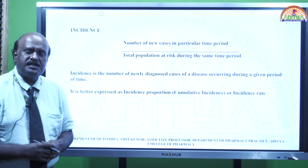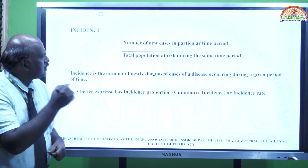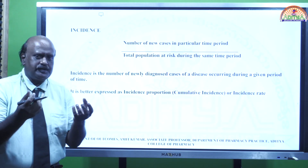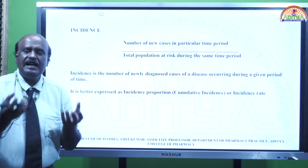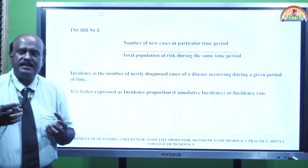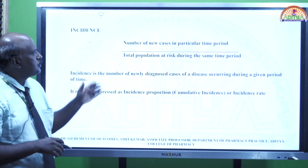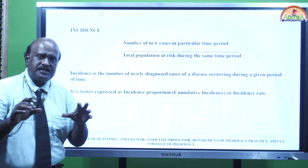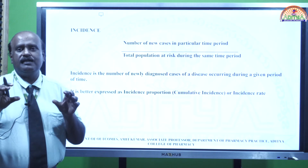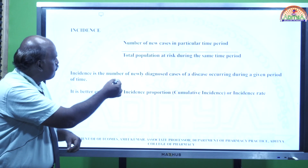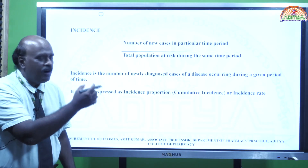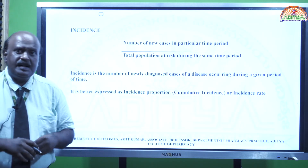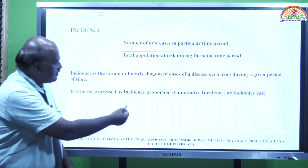Incidence is equal to the number of new cases in a particular time period divided by the total population at risk during the same time period. So if a population is observed for one year from January to December, the number of new cases in that same time period divided by the total population at risk gives us the incidence — the number of newly diagnosed cases of a disease occurring during a given period of time.